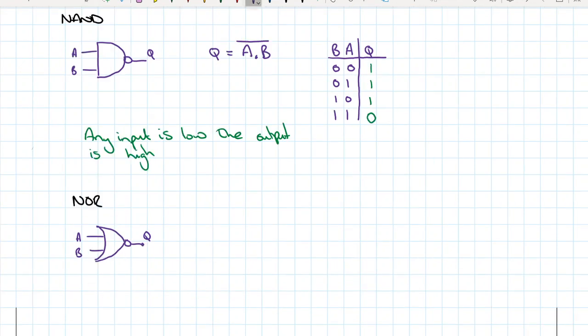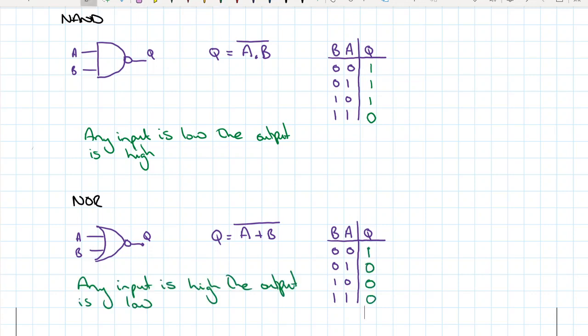So our NOR gate then, same as our OR gate, but the whole thing again is knotted, we've inverted the output. So in writing the truth table we can remember that if any input is high the output is going to be low. So you end up with a truth table that looks like that.